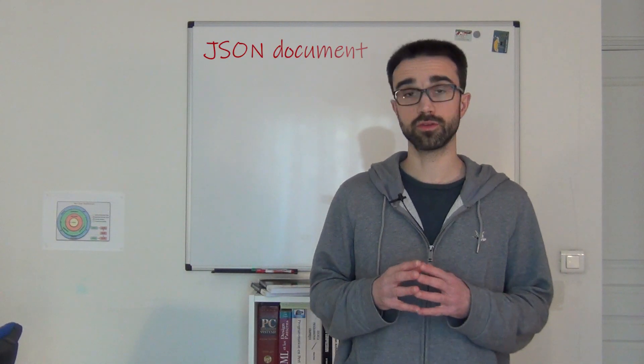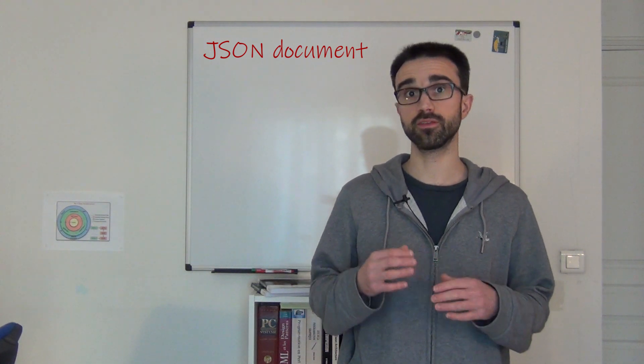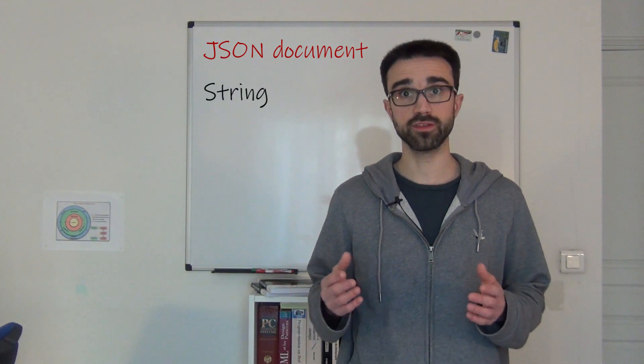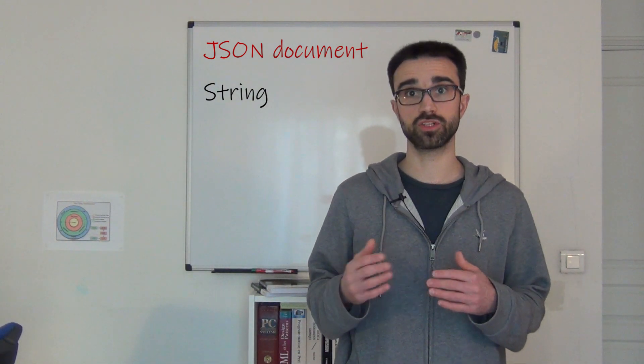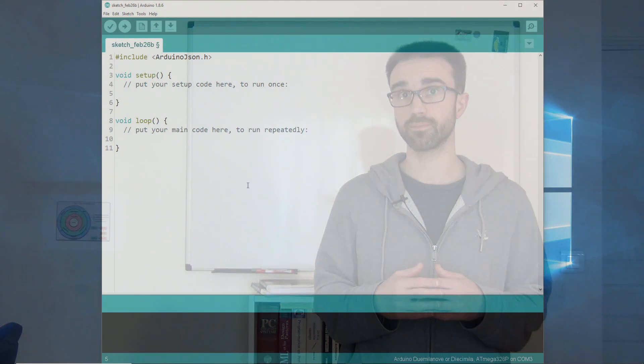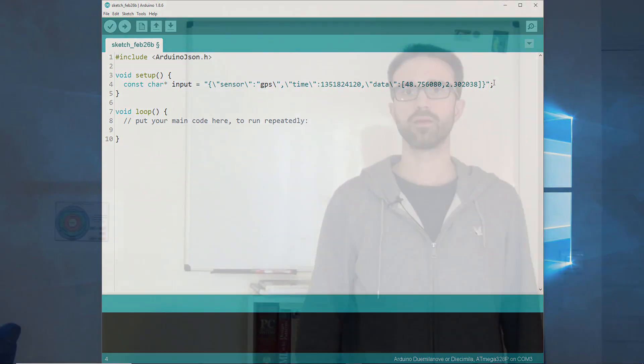Now, we'll create the JSON document that we'll use in this tutorial. We'll assume that this document is in a string, but as you will see later, Arduino JSON is also able to deserialize the JSON document from a stream, such as a file or a network connection. Here is the JSON document we are going to use. We'll put it in a string named Input. Because the string contains quotation marks, we need to escape them. Otherwise, the compiler will believe that the string ends at the first quotation mark.